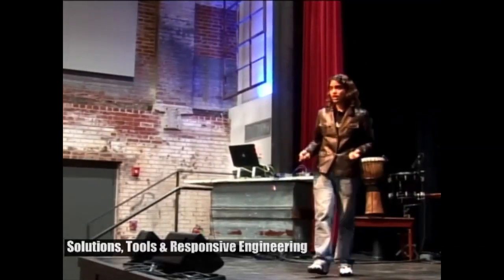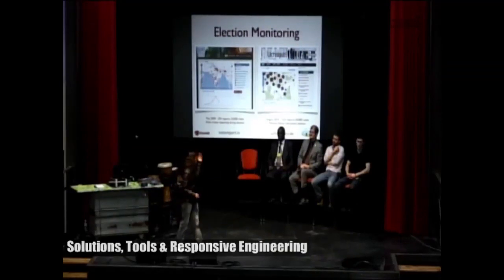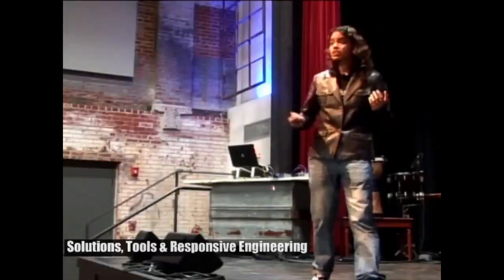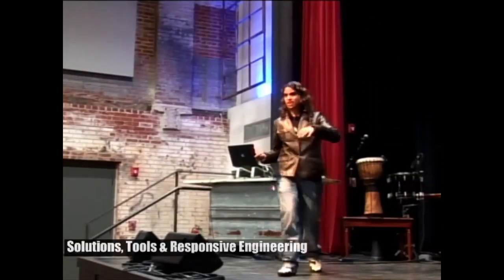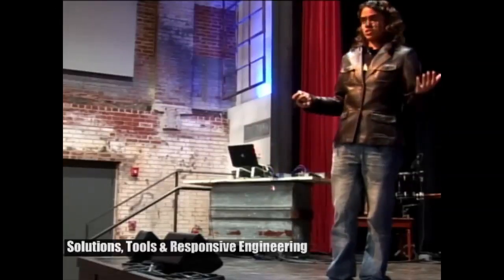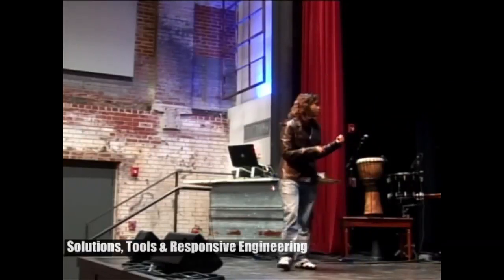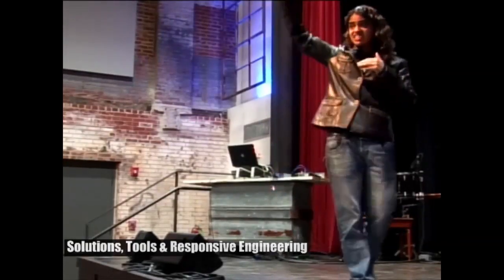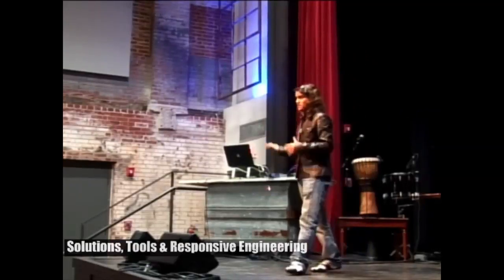These are other examples of Ushahidi being used in election monitoring in India, in Kenya during the referendum. It's also been used in citizen journalism, the Harris map, and the oil spill crisis. You can see the diversity of a platform like that being used in different areas. It was even used during the Egyptian revolution. And this is the example of it being used by UNOCHA, which had three tiers of quality assurance.